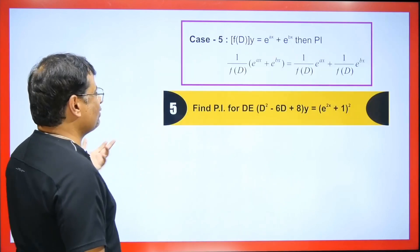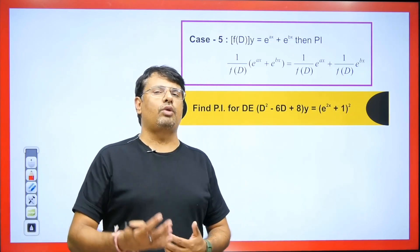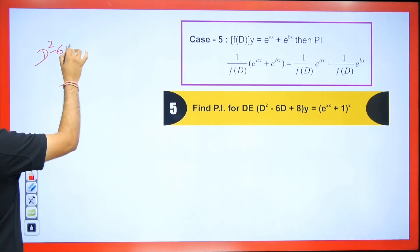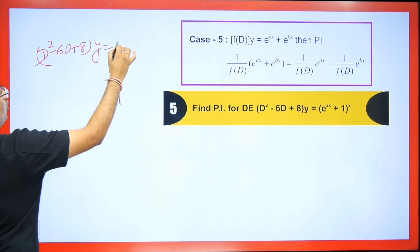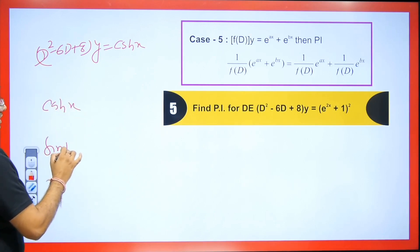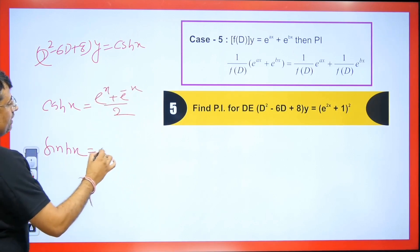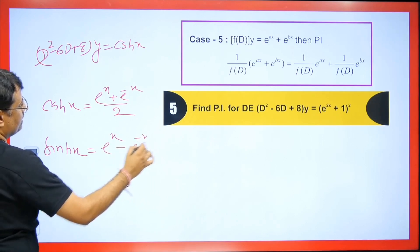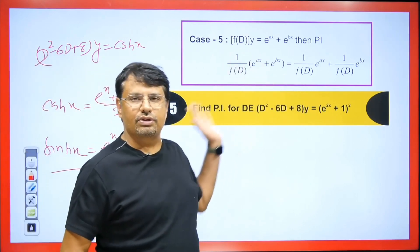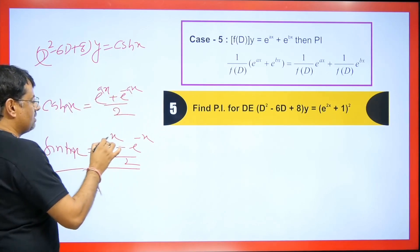When the right-hand side involves cosh x or sinh x, use the identities: cosh x = (e^x + e^(−x))/2 and sinh x = (e^x − e^(−x))/2. If the argument is ax, the formula uses e^(ax) accordingly. Substitute these expressions directly and then apply the standard PI method. This is an important formula you should note.